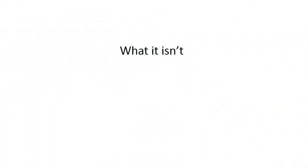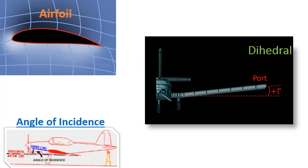What wing planform is not: we're not discussing the shape of the airfoil — that's a different aspect. We're not talking about dihedral, how the shape of the wing is in relation to the airplane or the wingspan. You can see an example of dihedral there; it can go up or down, but that's not what we're discussing. We're also not discussing the angle of incidence — the angle of the wing chord line to the angle of the airplane from nose to tail.